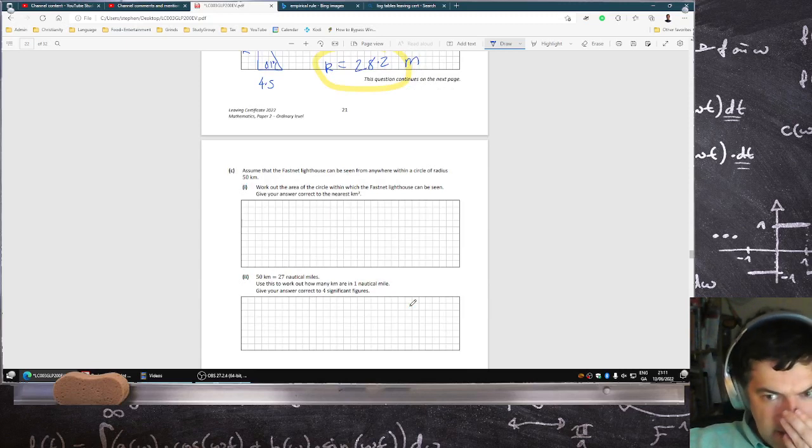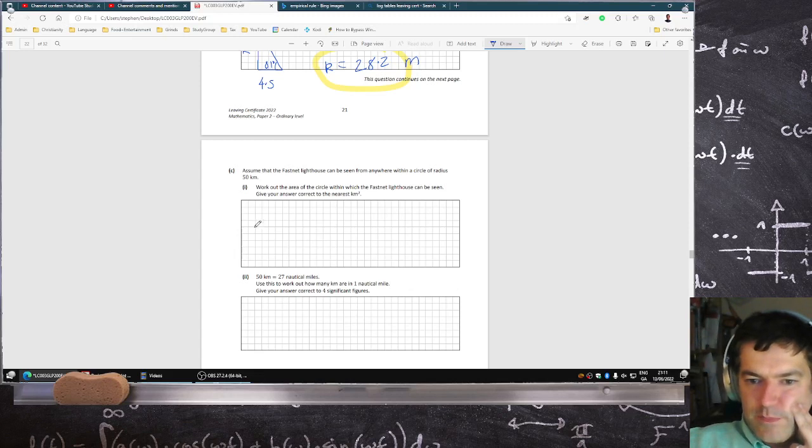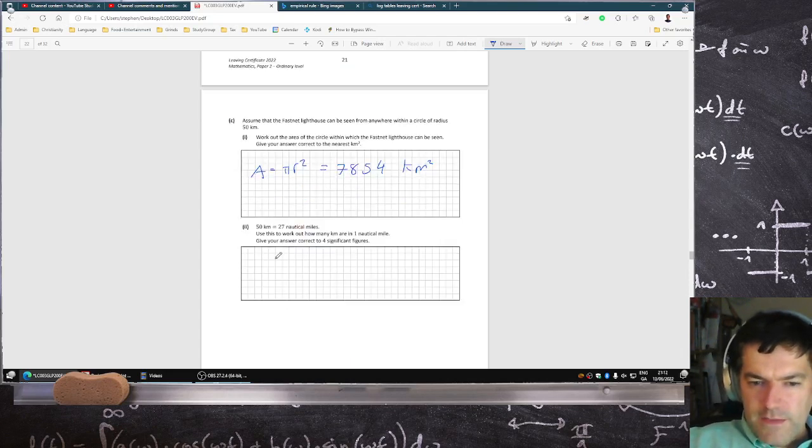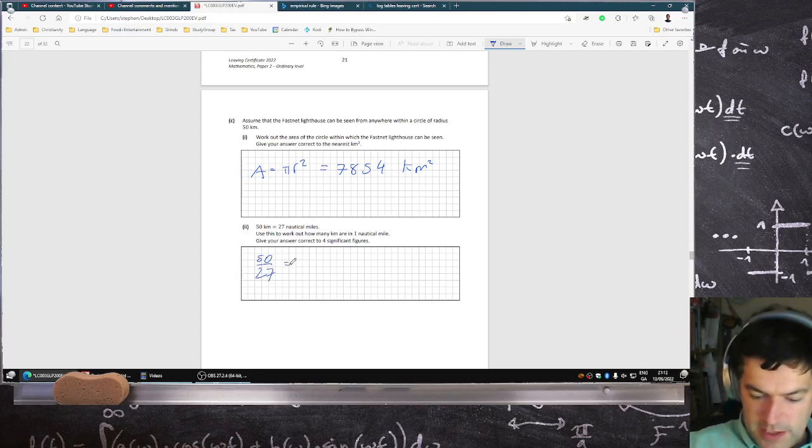Assume the lighthouse can be seen from anywhere within a circle of radius 50 kilometers. Work out the area of the circle. The area is pi r squared to the nearest kilometer. Pi times 50 squared is 7,854 kilometers squared. 50 kilometers is 27 nautical miles, use it to work out how many kilometers are in one nautical mile. So 50 divided by 27 would be 1 nautical mile, to 4 significant figures would be 1.852 kilometers.